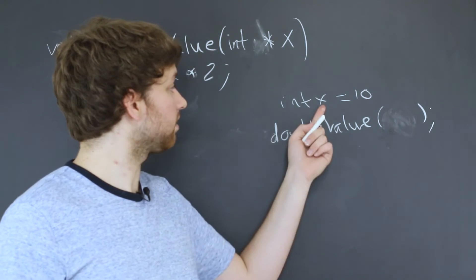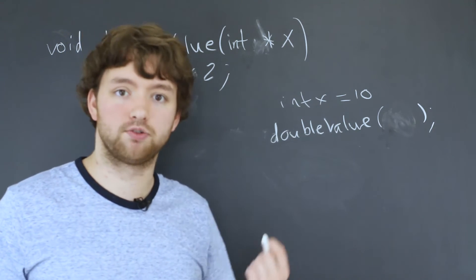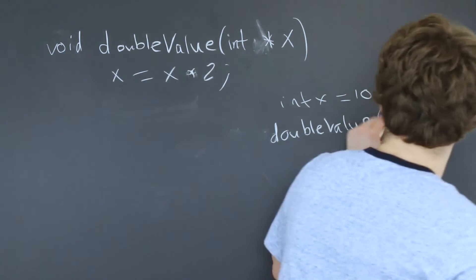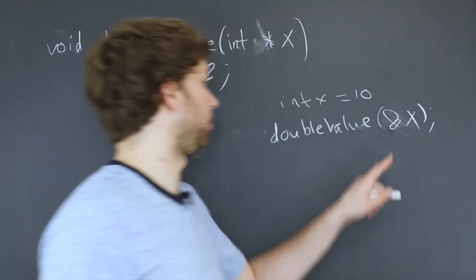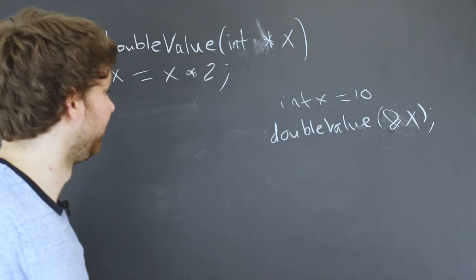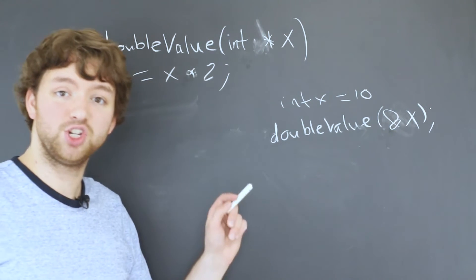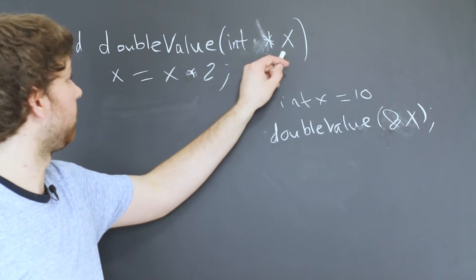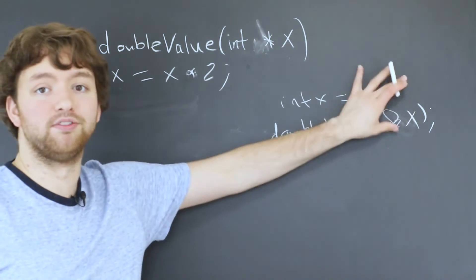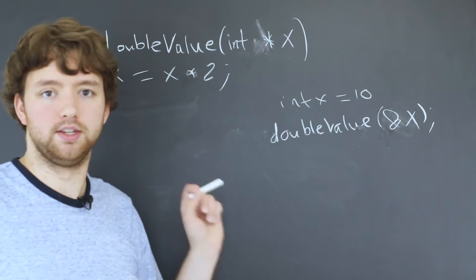And instead of passing x, we need to pass the address of x, which is done with the address of operator, the ampersand. So in this situation, any changes we make to x here is going to be reflected here because they're pointing to the same thing.